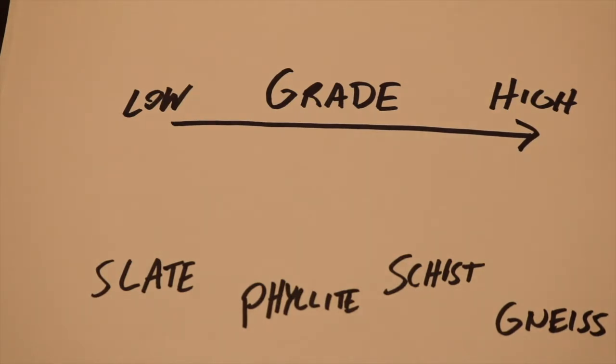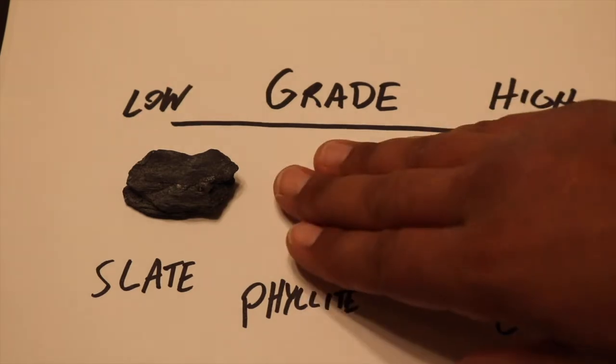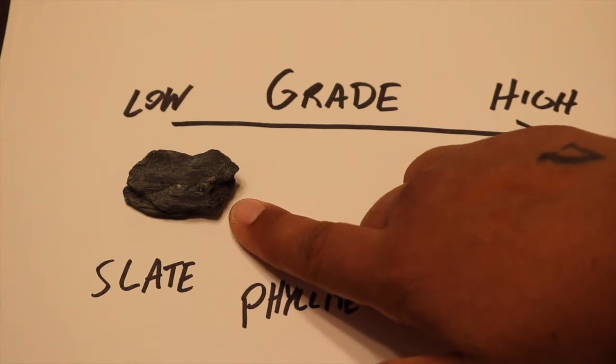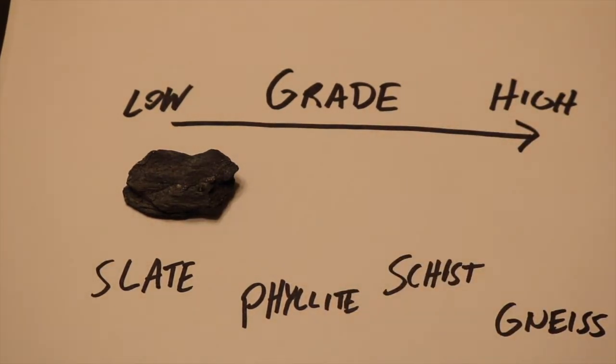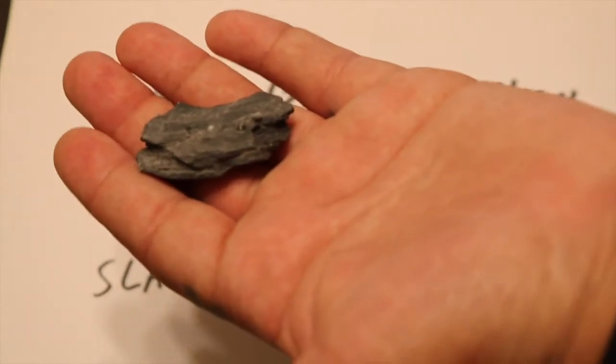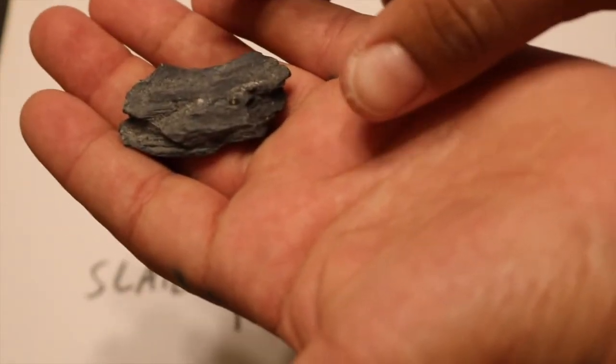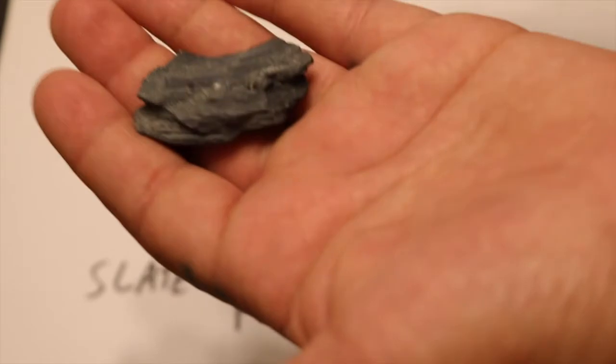Let's take a look at some rock examples for each grade. The first one is slate. Slate is considered a low grade metamorphic rock, which means it forms at relatively low temperatures and pressures, almost just above normal sedimentary rock conditions. Slate usually forms from a protolith of mudstone or shale. The difference is that mudstone is a more massive sedimentary rock, while shale contains fine grade sedimentary particles but has different layers.